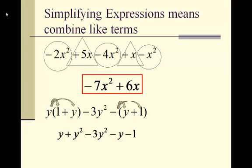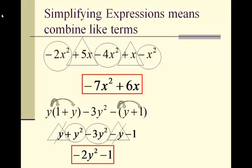From here, we look for like terms. We have y squared and negative 3y squared — they are like terms and they are going to combine together. We also have y and negative y; they are like terms and they combine together. When we combine y squared and negative 3y squared, we get negative 2y squared. The y and negative y cancel each other out. So our final answer will be negative 2y squared minus 1.